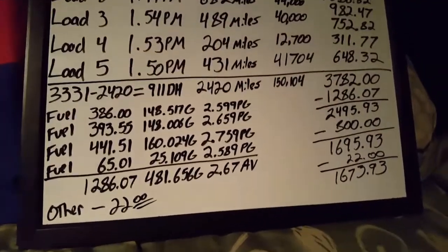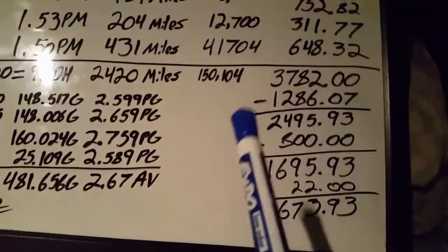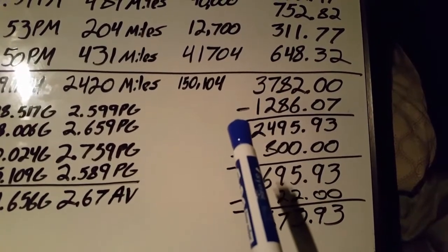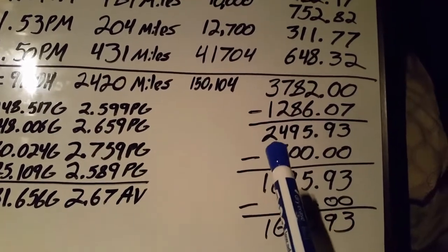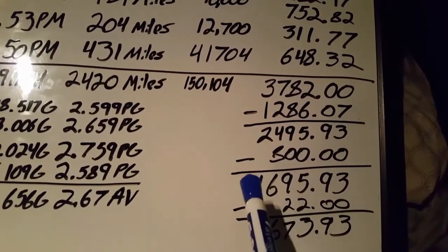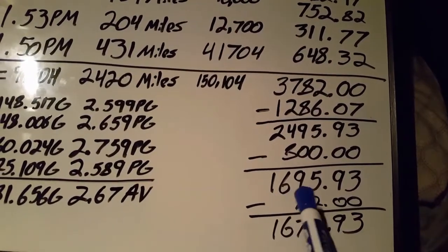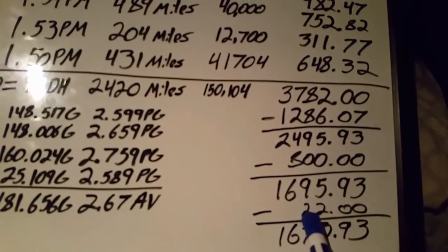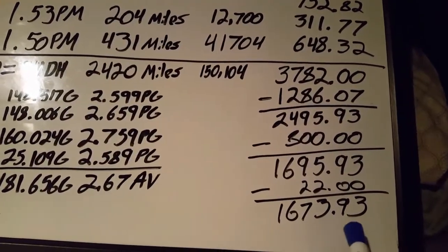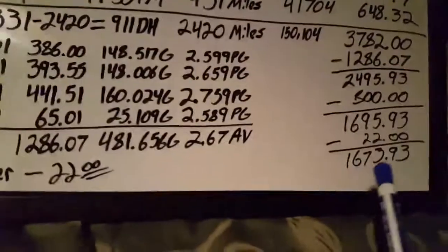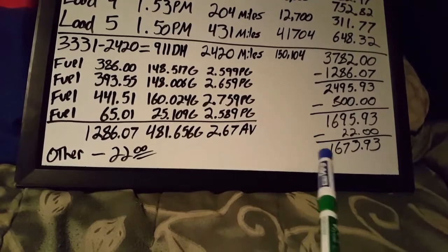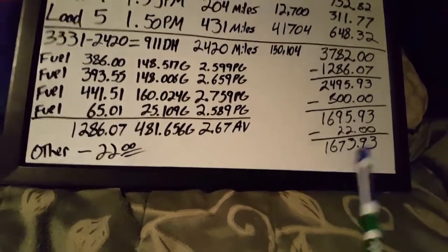Now to the nuts and bolts. Total revenue was $3,782. We subtract the fuel from that—$1,286.07—that leaves us with $2,495.93. Subtract our fixed cost which is $800, that gives us $1,695.93. I had two scale tickets, so that's $22. All together for the week I made $1,673.93.